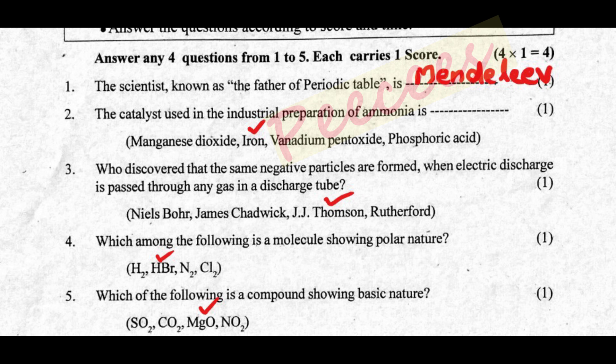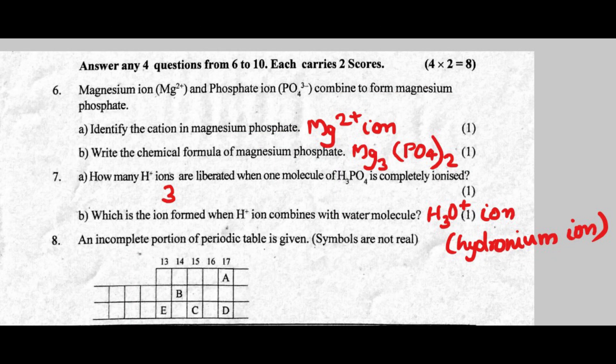Which of the following is a compound showing basic nature? Magnesium oxide. The second question involves magnesium ion and phosphate ion combined to form magnesium phosphate.